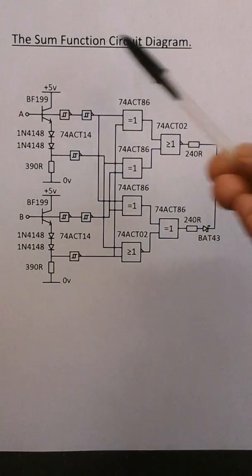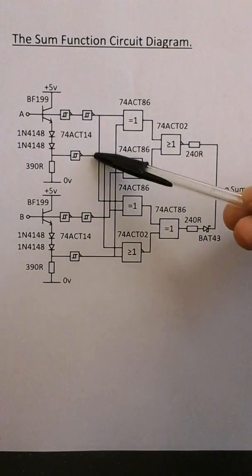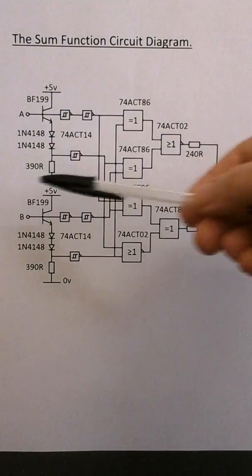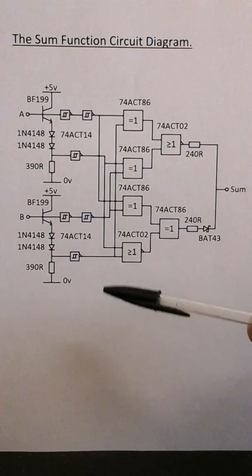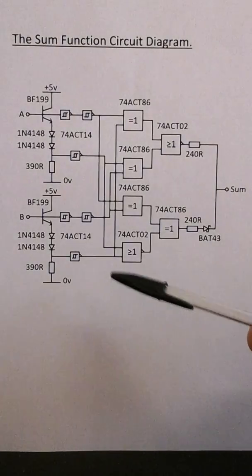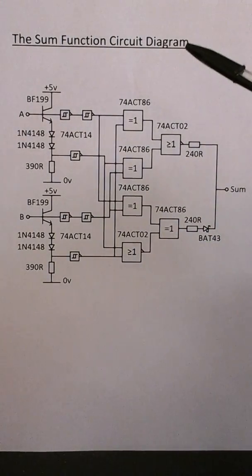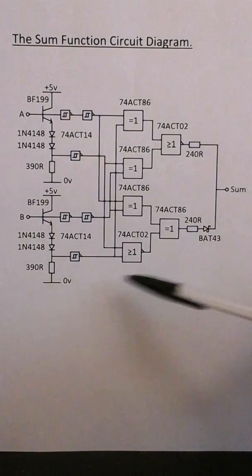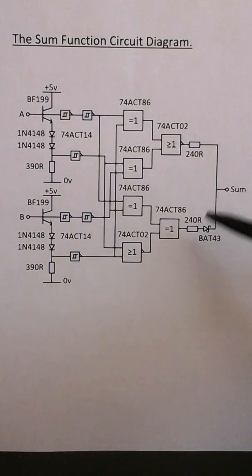Here we have the sum function circuit diagram. This is NOT a1, NOT a2, B1, and NOT b2. If you don't understand how I'm doing this, please refer to my fifth video called 'Binary Implemented Ternary Logic Circuits,' which will explain it in more detail. Sum2 is shown here and sum1 is shown here. The output is combined by two 240 ohm resistors and a Schottky diode to give the ternary output sum.